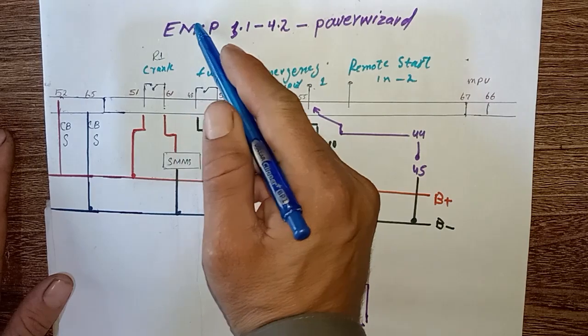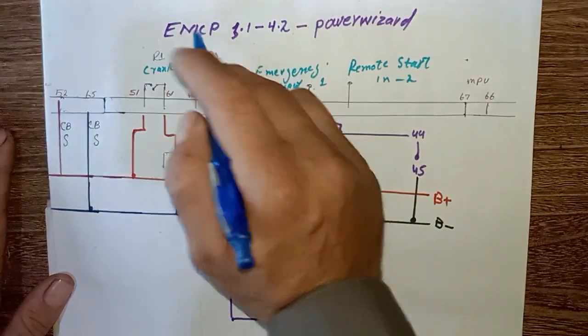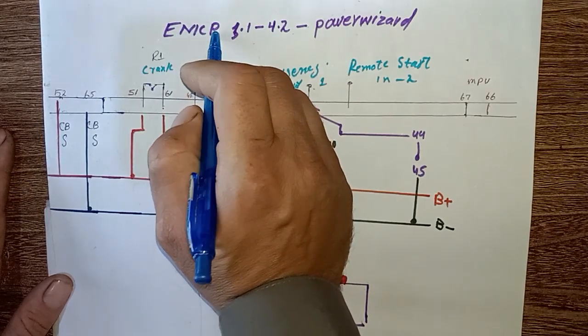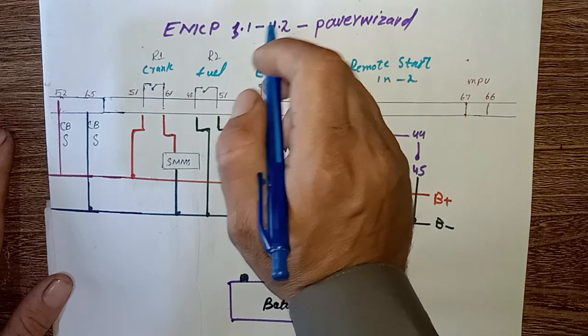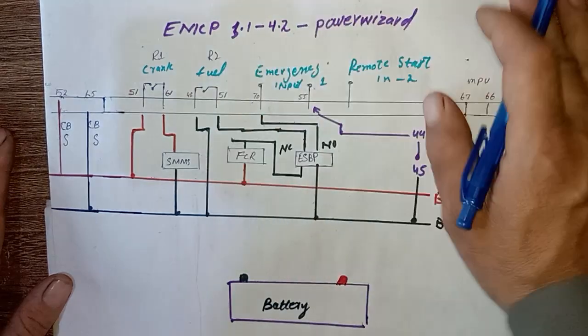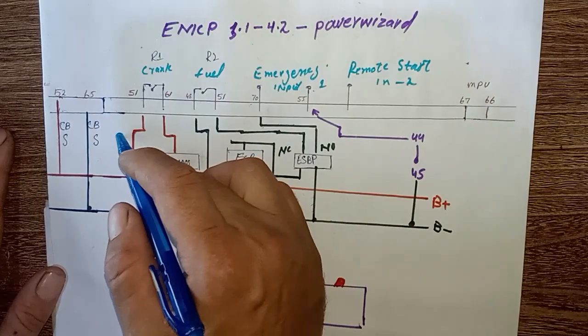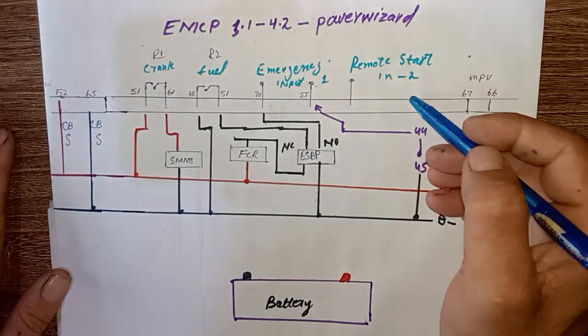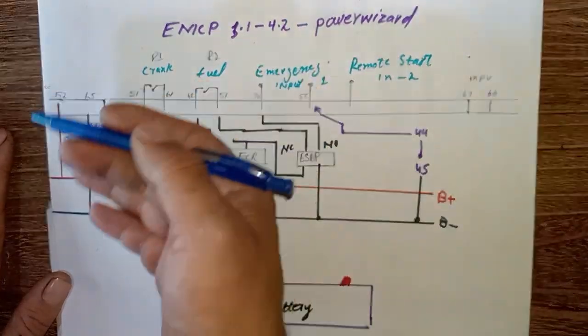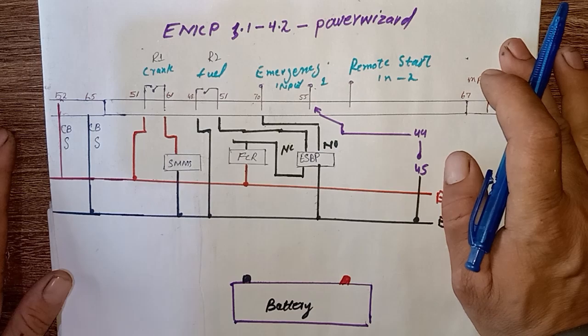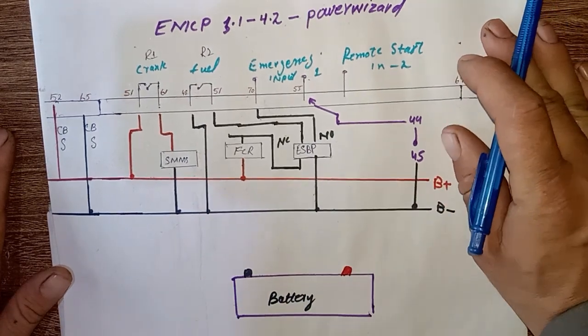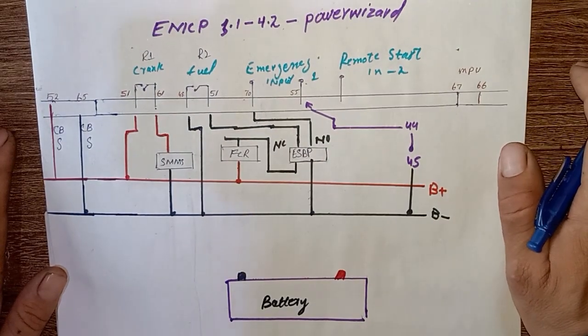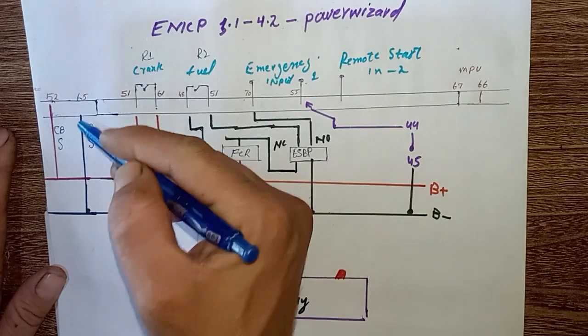So let's get started. First of all, as you can see here, EMCP stands for Electronic Module Control Panel. There's 3.1, 4.2, 3.2, 3.3 - these are the version numbers. I'll take some main pins to show how to wire and check the wiring of EMCP or PowerWizard and what is the wiring structure of these panels.